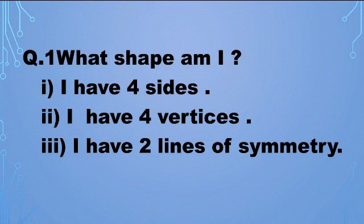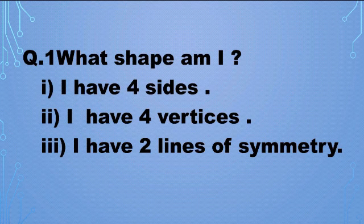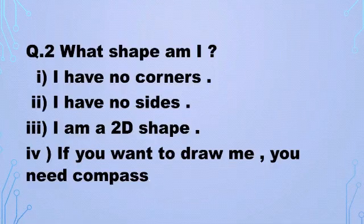Let's start with question number one: What shape am I? I have four sides, I have four vertices, and I have two lines of symmetry. So what shape am I? I have four sides, four vertices, and two lines of symmetry — you have to guess.